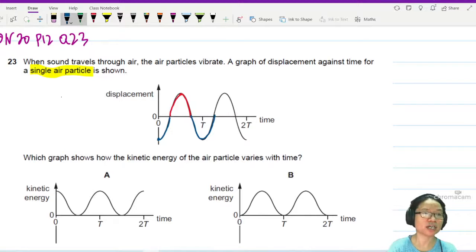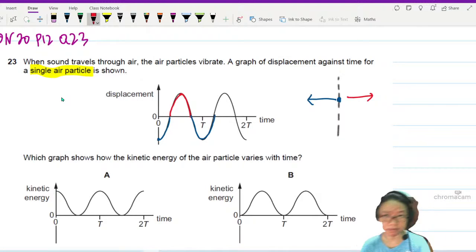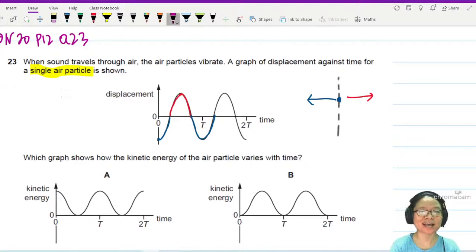So air particle is actually oscillating in, so maybe here would be the negative displacement, it would be here, it would be the positive displacement. Assuming that the direction of wave or the direction of energy transfer is here.